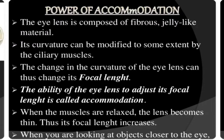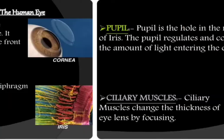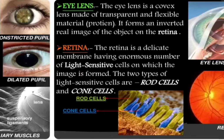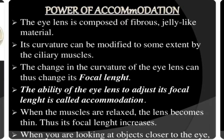Now coming to the discussion of power of accommodation. The eye lens is composed of a jelly-like material called fibrous tissue. This jelly-like, transparent material has a curvature that can be modified. The curvature is controlled by the ciliary muscles.